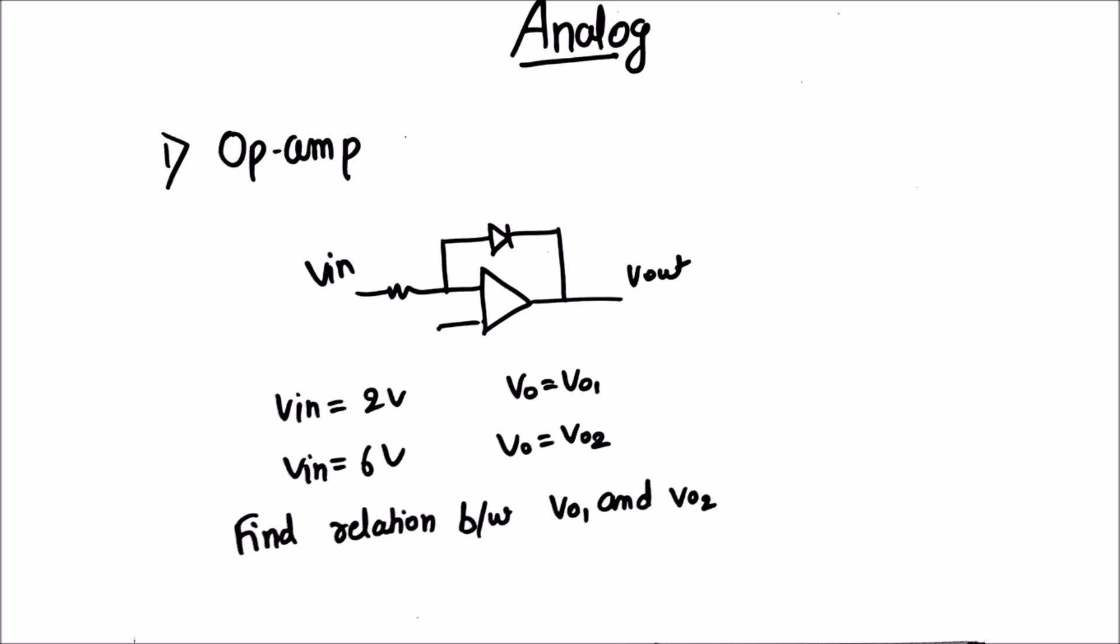Analog was the major contributor in which around seven questions were asked from opamp alone. One question, a log amplifier was given and they gave output V01, V02 corresponding to VIN 2 volt and 6 volt, and they wanted the relation of V1 and V02.